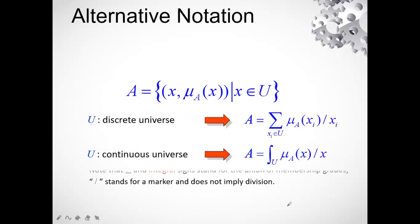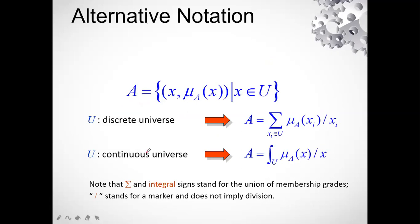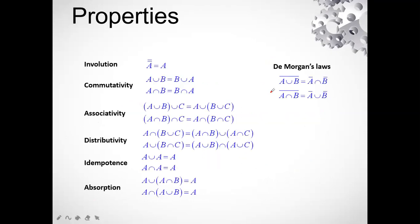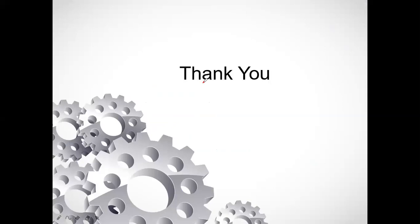These are the alternative notations: a discrete fuzzy set is defined using the summation sign, while a continuous fuzzy set is defined using the integral sign. The notation uses fuzzy set A, element x, and membership function mu_A(x), where x belongs to the universal set. Certain properties will be seen in further lectures and used where needed — they are almost the same as in crisp sets. That's all for today's lecture.